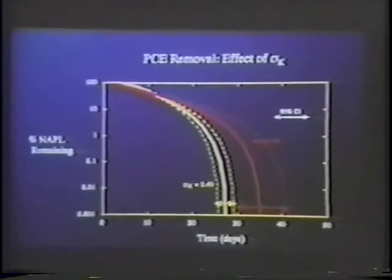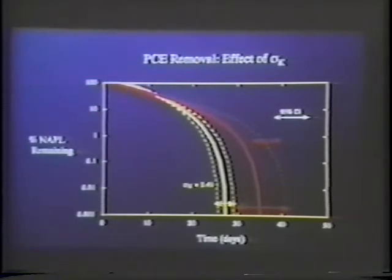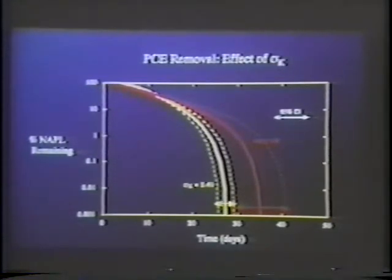Tim did many realizations to get a handle on average behavior and which properties influenced it. One example: plotting percent NAPL remaining versus time as a function of variance — the degree of heterogeneity — as you increase heterogeneity, the red curve indicates it takes longer to clean up the aquifer. The confidence interval represented by dotted lines also increases, so your certainty in the prediction decreases significantly with increased variability. Tim did about 25 realizations for every parameter varied; each realization took 12 to 24 hours on a high-end workstation.